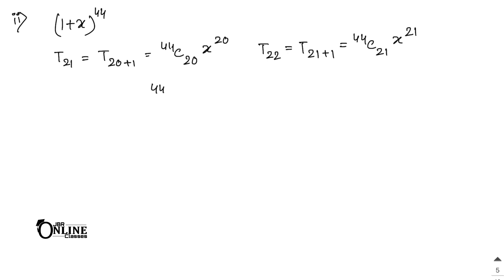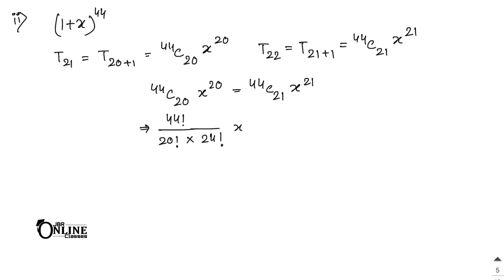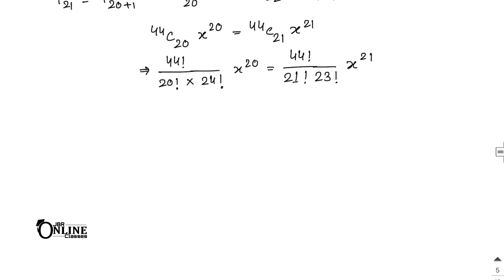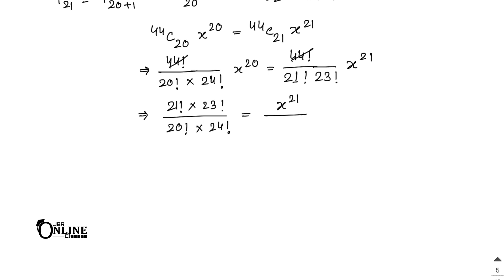Since T21 = T22: 44C20 · x^20 = 44C21 · x^21. Expanding: [44! / (20! × 24!)] × x^20 = [44! / (21! × 23!)] × x^21. The 44! cancels, giving: [21! × 23!] / [20! × 24!] = x^21 / x^20.